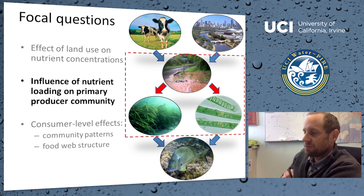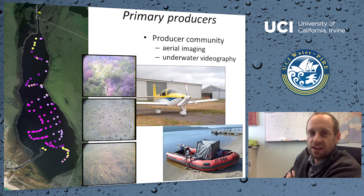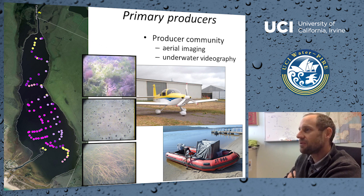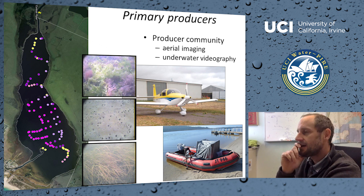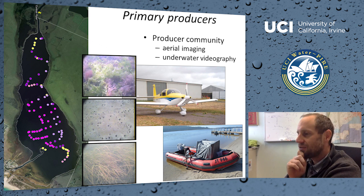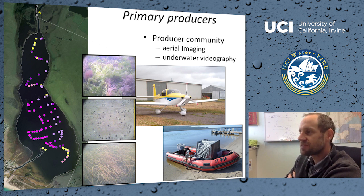When I talk about primary producers, I'm talking about how the system shifts from seagrass to macroalgae. We did this using a combination of aerial imaging — a collaboration with engineering, using a plane to take aerial images of estuaries across the state — and boats to ground-truth those images and classify whether the sediment was bare, vegetated by macroalgae, or vegetated by seagrass.